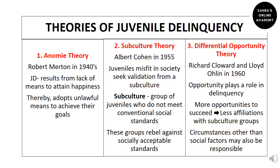The next theory is differential opportunity theory, presented by Richard Cloward and Lloyd Ohlin in the 1960s. According to this theory, if juveniles are presented with more opportunities to succeed, they would be less likely to affiliate with subculture groups. Greater opportunities reduce the likelihood of juveniles turning to delinquent subcultures.